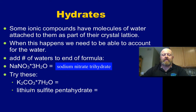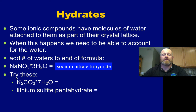Here are two examples for us to test to make sure we understand this concept. If you want to try these on your own first, please pause the video now. We have K2CO3·7H2O. The first thing we want to do is tackle the K2CO3. K is potassium, CO3 is a polyatomic ion called carbonate, so we have potassium carbonate. Potassium is a group one metal, so we don't need a Roman numeral. Then we're attaching seven waters, so it would be potassium carbonate heptahydrate.